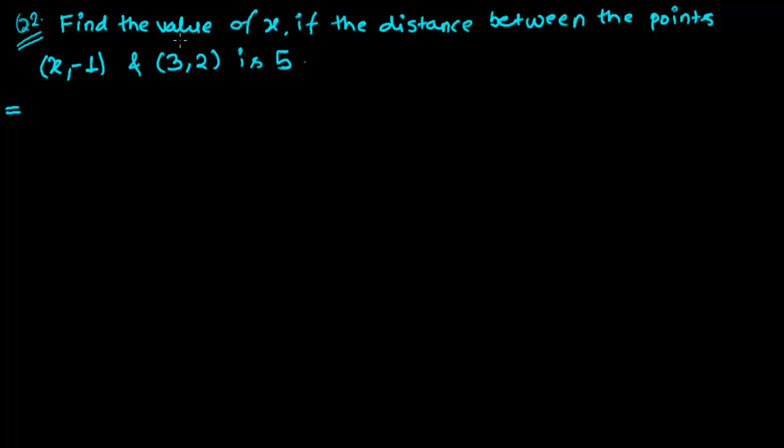The question is saying find the value of x if the distance between the points (x, -1) and (3, 2) is 5.